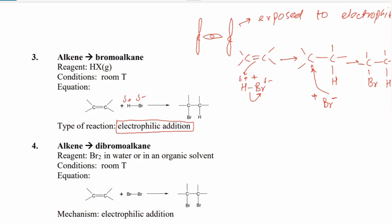Next, alkene can become dibromoalkane. This involves the addition of a non-polar molecule Br₂. Although Br₂ is non-polar, as it gets close to the alkene, the electrons of Br₂ are repelled and it gains partial positive and partial negative charges temporarily. So it becomes polar for some time — Br⁺ and Br⁻ — not a strong polarity but polar momentarily, and it is then able to attack the alkene.